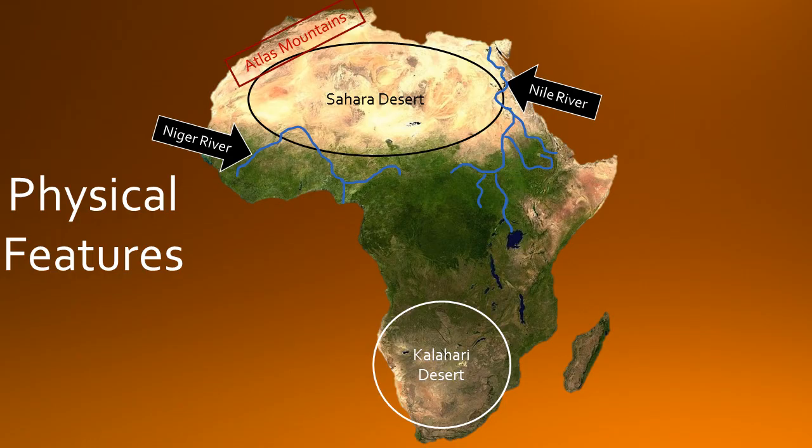This is the Niger River. It is located in western Africa. It flows east to west and runs through the countries of Mali, Niger, and Nigeria, and empties into the Gulf of Guinea.